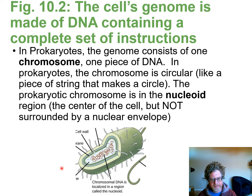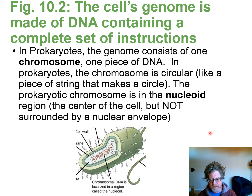When cells divide, it's really important that they reproduce the DNA. The DNA has all the information that tells you what organism this is — all that information in the DNA is called the genome. Bacteria have one piece of DNA; it's circular, and if you unwound it, it would be like a piece of string tied together. This one piece of DNA is called a chromosome.